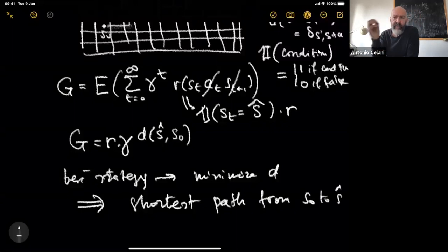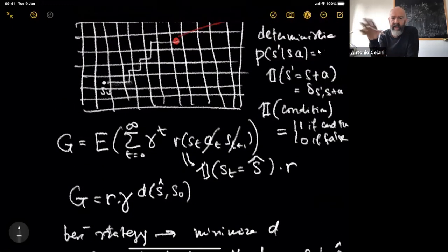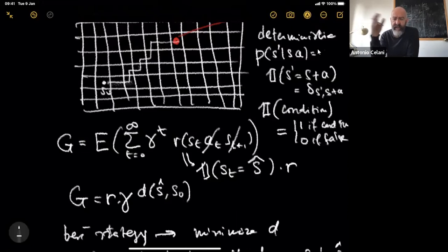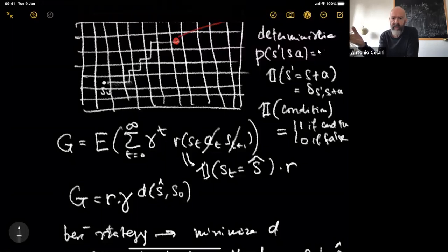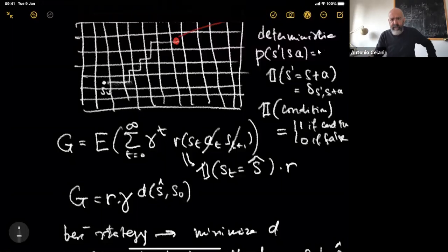So we are casting another classical computational problem — finding the shortest path — into this framework. I'm writing this for grid world, but you could write it on any kind of graph. Any problem of finding the shortest path from point A to point B, given the transition probabilities, can be cast as a Bellman equation and solved by value iteration. It's geometrically intuitive but could live in abstract graph spaces.